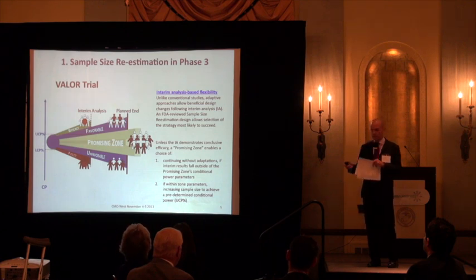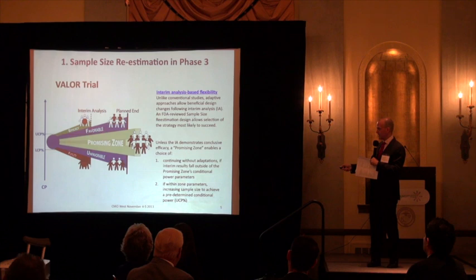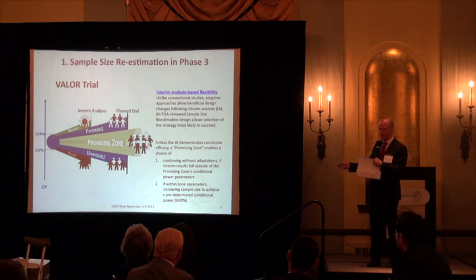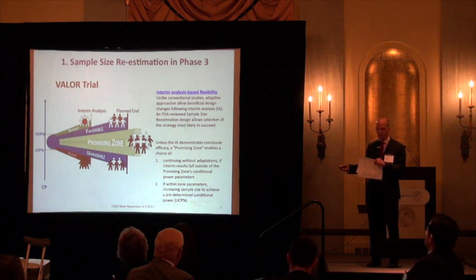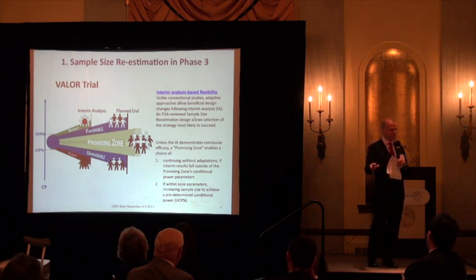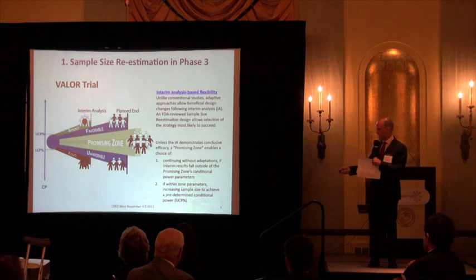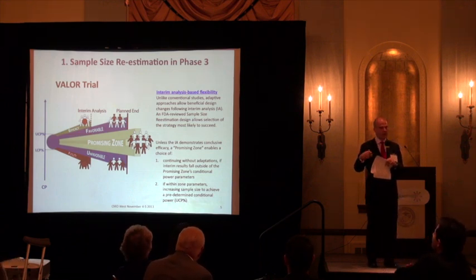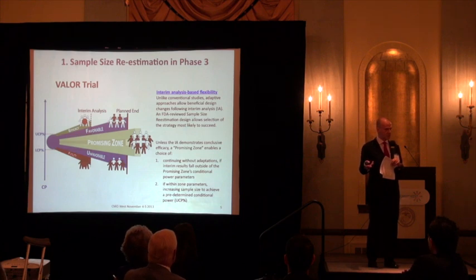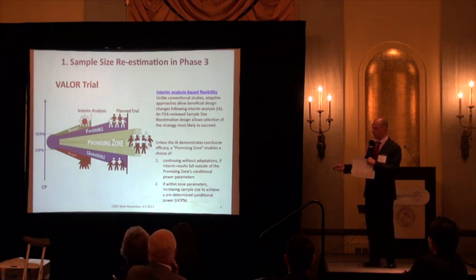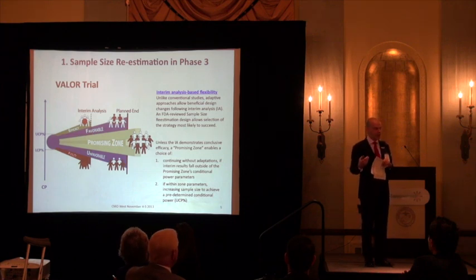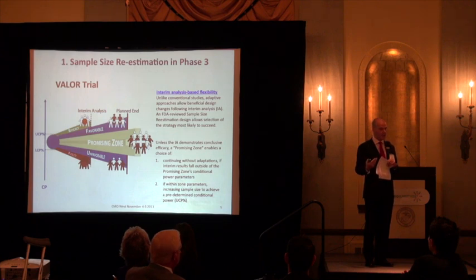That left two options: continue the trial as planned if data was favorable enough to reach the original sample size, or continue if data was unfavorable and no sample size adjustment was required. What actually happened was the DSMB said the data was promising — meaning there's a clinical effect, but we need more patients.